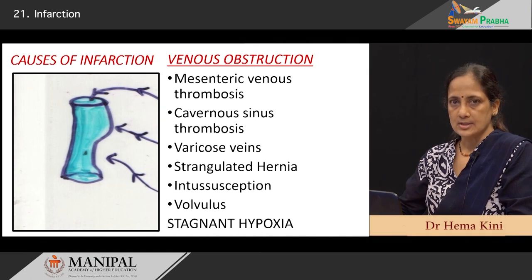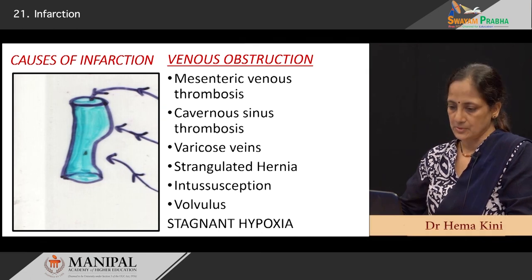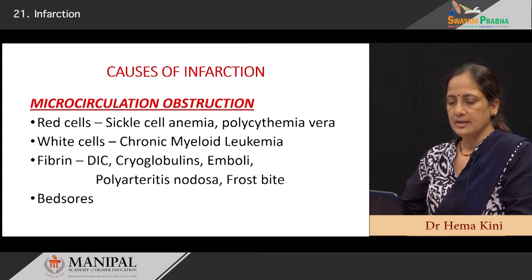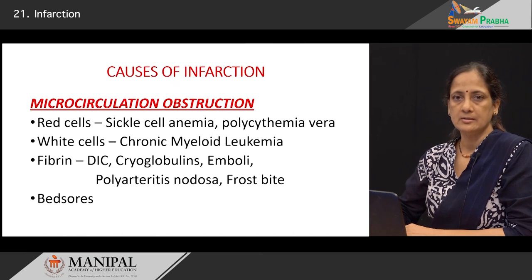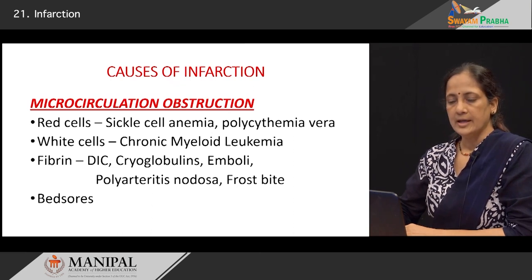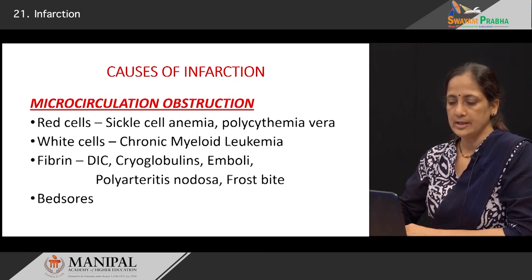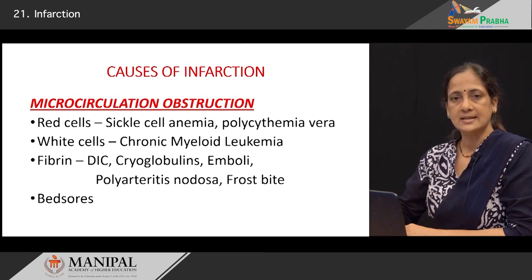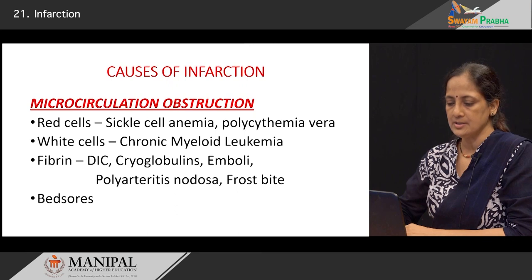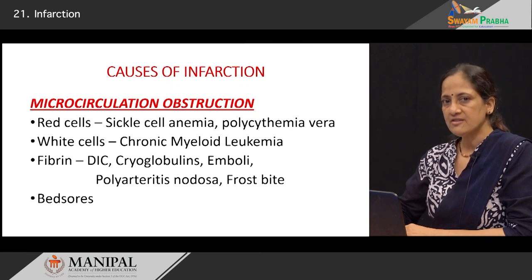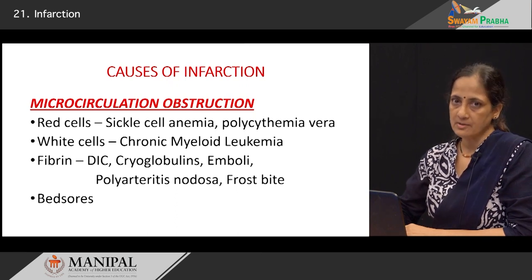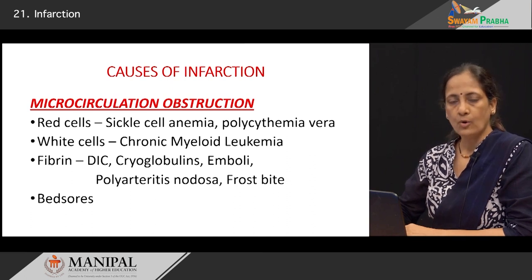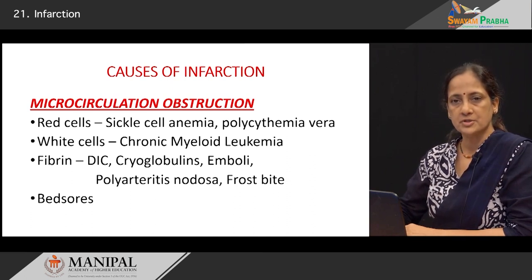Microcirculation causes can also result in infarction of tissue. If the circulation is blocked by red cells, for example in sickle cell anemia or in polycythemia vera, increased white cell counts as seen in chronic myeloid leukemia, formation of fibrin thrombi in the microcirculation as seen in disseminated intravascular coagulation, and excessive pressure causing compression of the microcirculation as seen in bed sores, are all causes for infarction of tissue.